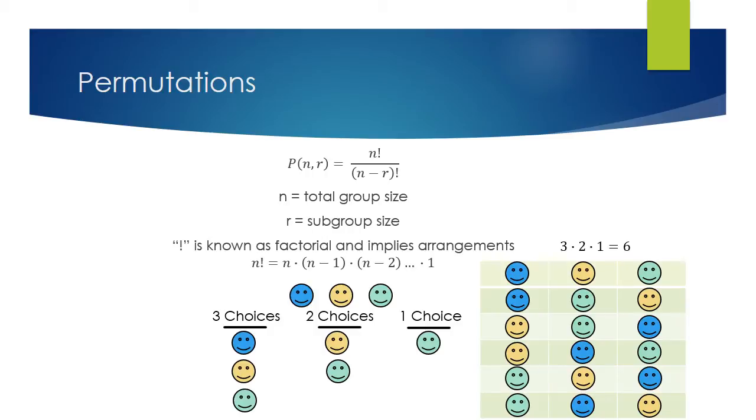So the formula for permutation itself is given above. It's n factorial over n minus r factorial. So n represents your total group size, and r represents the subgroup size. So in the example below with the smiley faces, we have three, and we were choosing three.